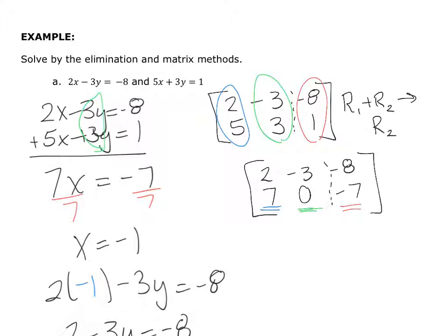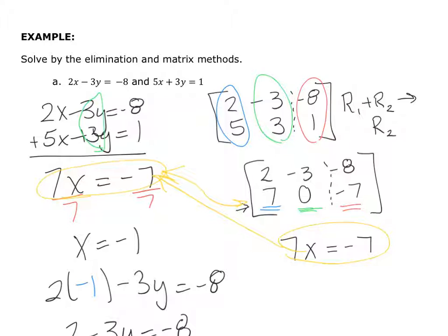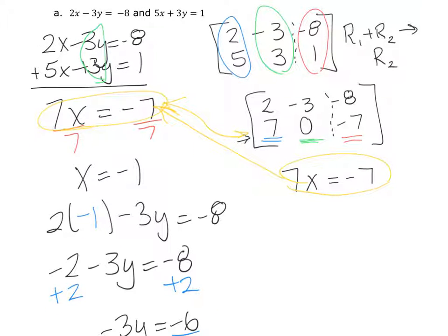This resulting row is the same as what we computed by elimination. Rewriting it: 7x equals negative 7, so x equals negative 1. I then substitute negative 1 into one of the original equations to find y, and I get the same ordered pair as before: (negative 1, 2).